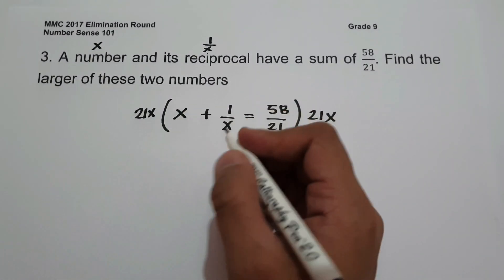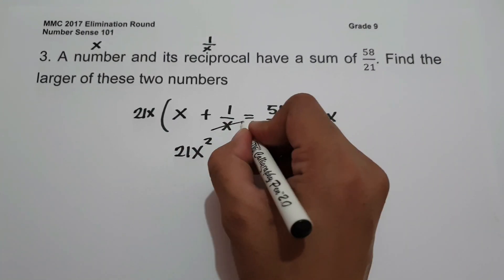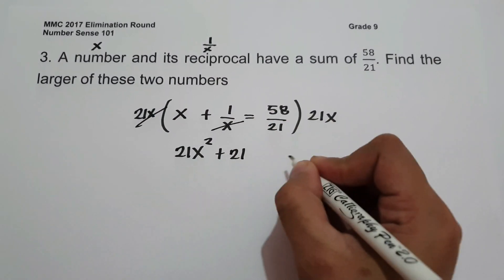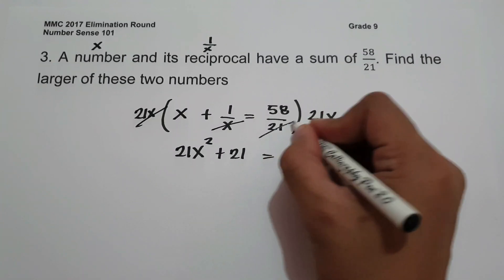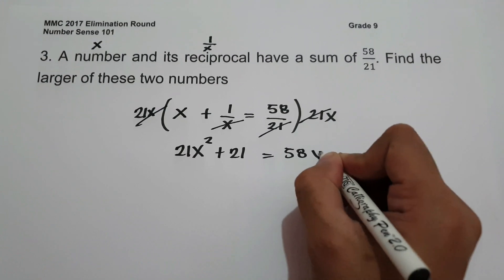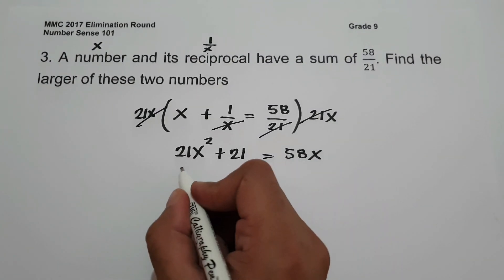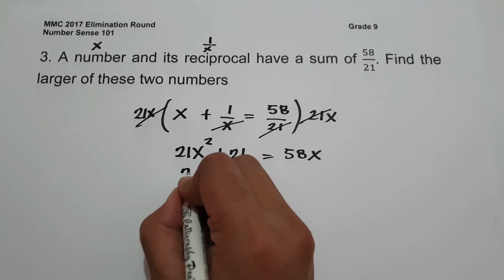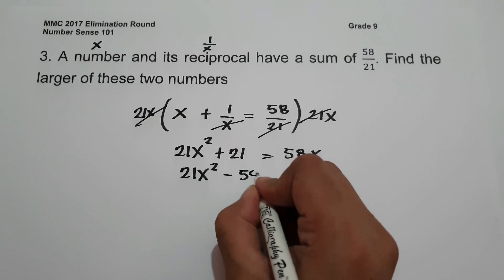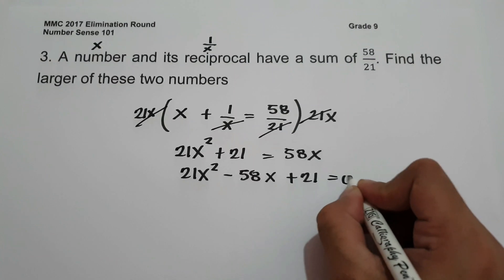21x multiplied by x gives 21x squared. Canceling x, 21 times 1 gives 21. Canceling 21, 58 multiplied by x gives 58x. Moving 58x to the side of 21x squared plus 21 gives us 21x squared minus 58x plus 21 equals 0.